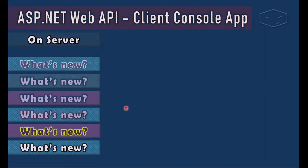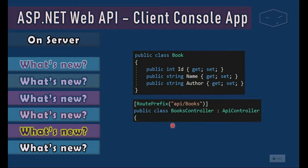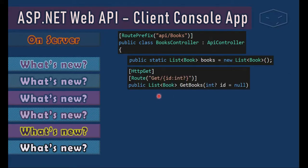We will handle books. For that, in our Web API on the server, we will have a class for books with an integer that is the ID, a string for the name, and a string for the author. It will also include a books controller with a route prefix of API slash books. This controller contains a static list of books.